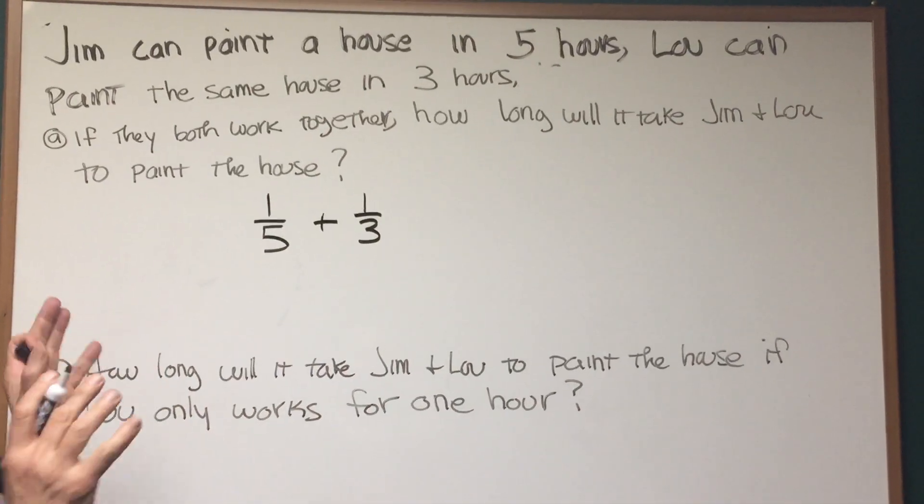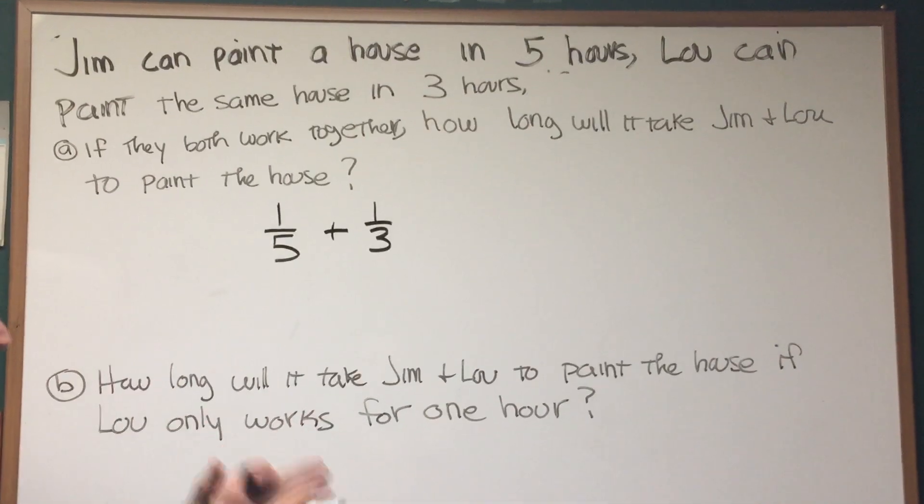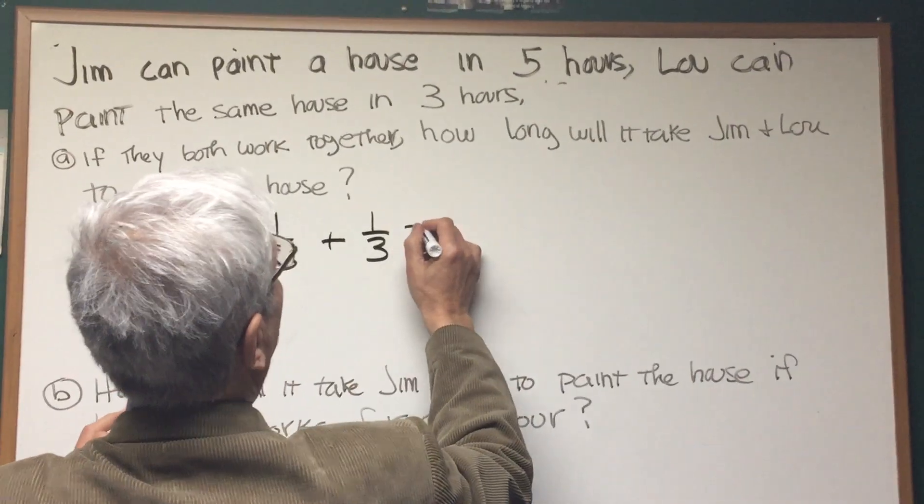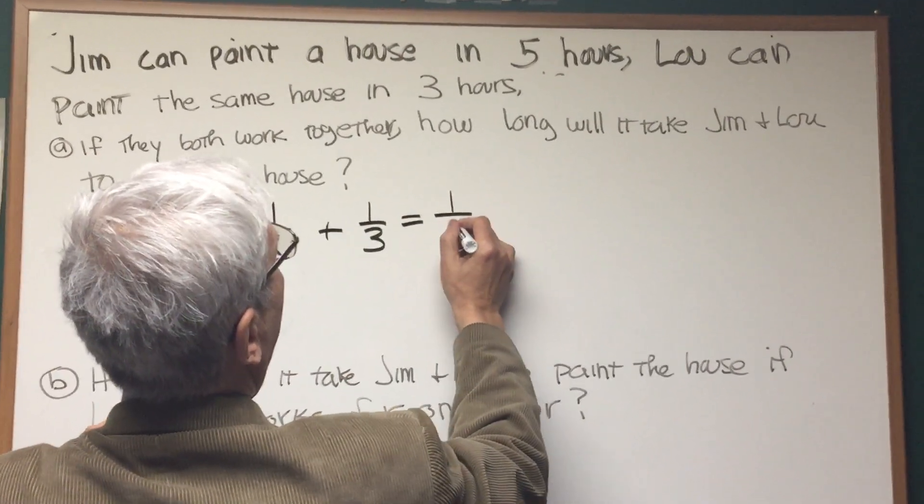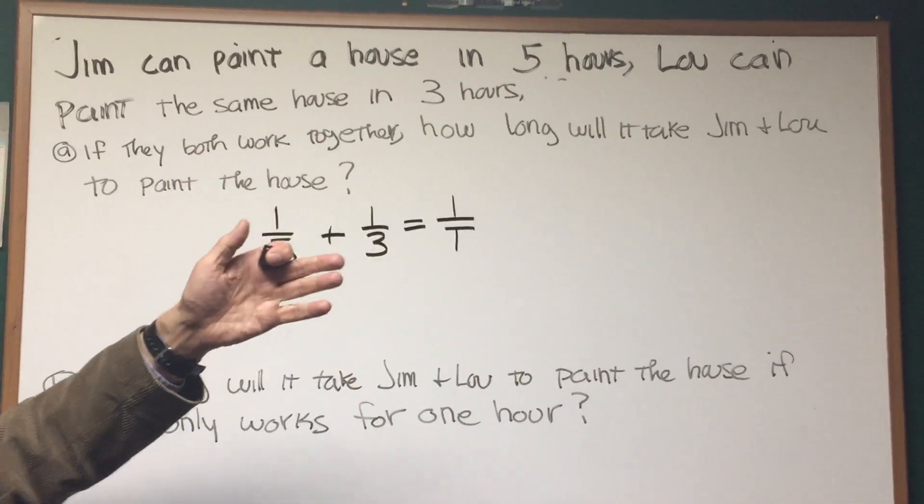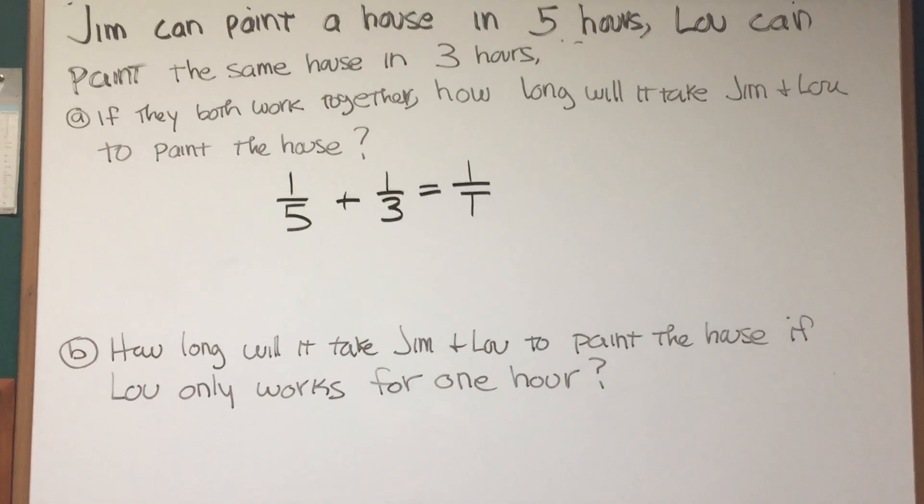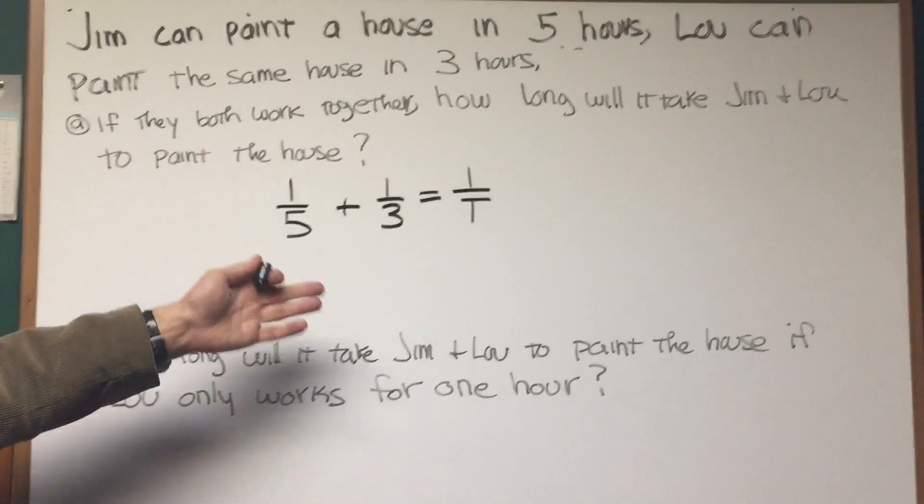Now in math, we usually don't add rates, but because they're both working on the same project, the same task, we can add the rates and that's going to give us how long it will take to paint the house, one over T. T will be the combined time of when Jim and Lou are working together. So all we have to do is solve for T.